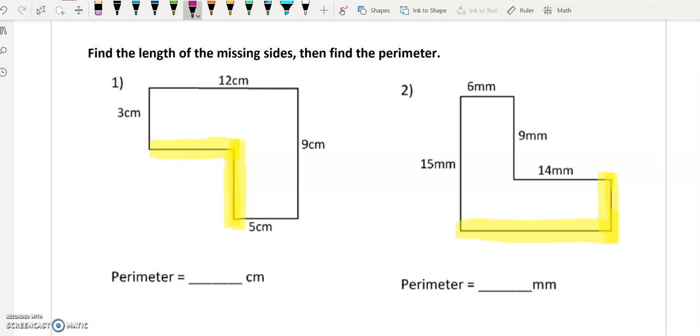But what's really nice is we can use our rules of line segments to help us figure out the missing lengths. So if you notice, we are missing a length here and we are missing a length here in this first shape.